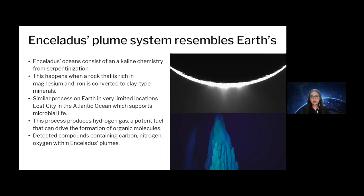There are also detected compounds containing carbon, nitrogen, and oxygen within Enceladus' plumes from the NASA Cassini mission — compounds we know are the precursors of life on Earth. Whether the mineralogy of Enceladus is similar to Earth's mineralogy, we don't know yet. Perhaps in the future we could study Enceladus' mineralogy to help answer more questions about whether it would be a good candidate for the search of life.